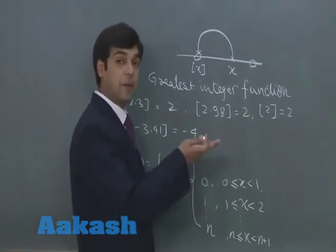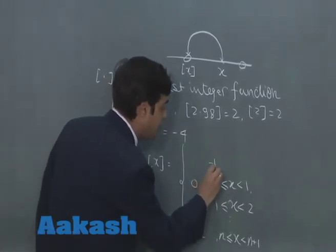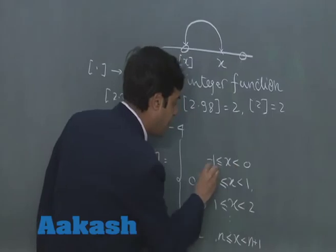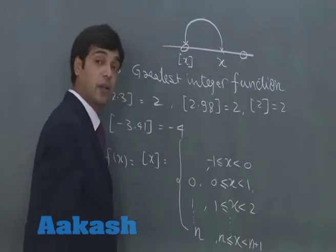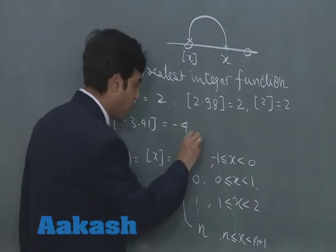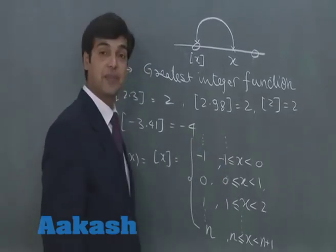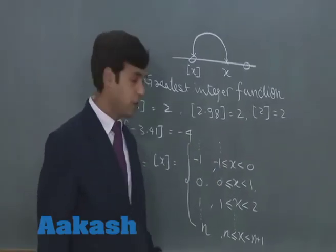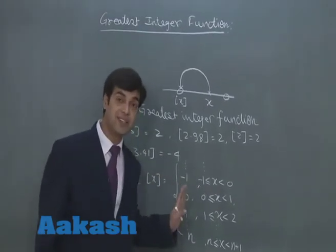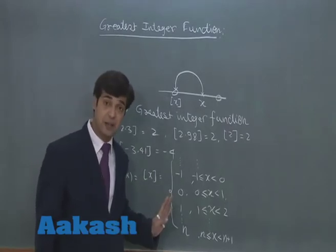On the other side, moving to negatives: if x lies between minus 1 and 0, the greatest integer value becomes minus 1, and so on. We can continue the pattern on the negative side as well. In this way, we can clearly define the greatest integer function across different intervals.